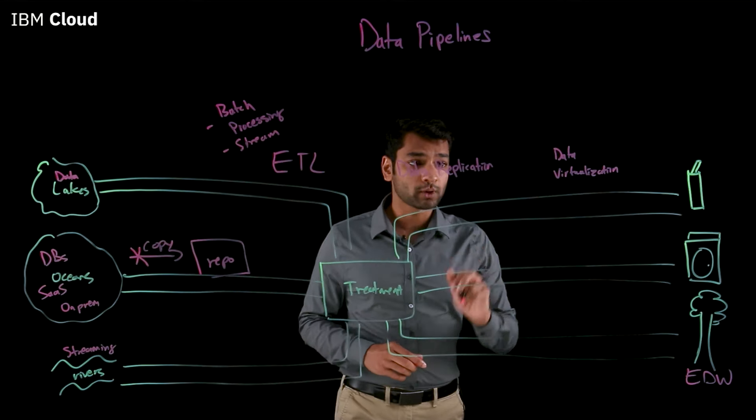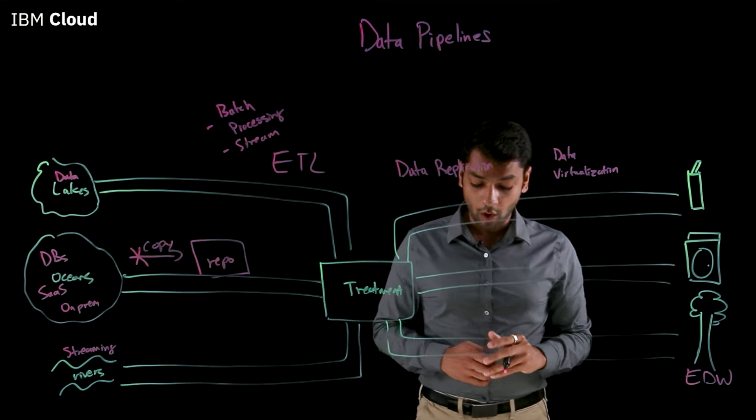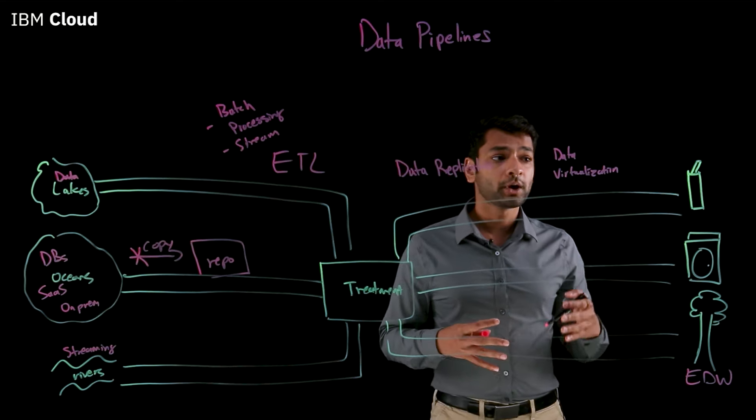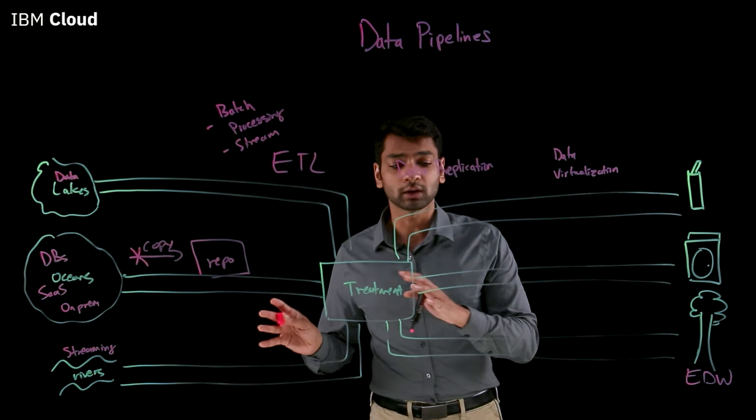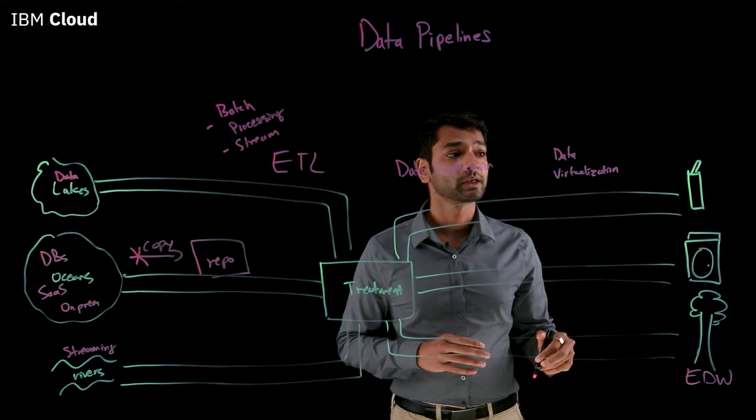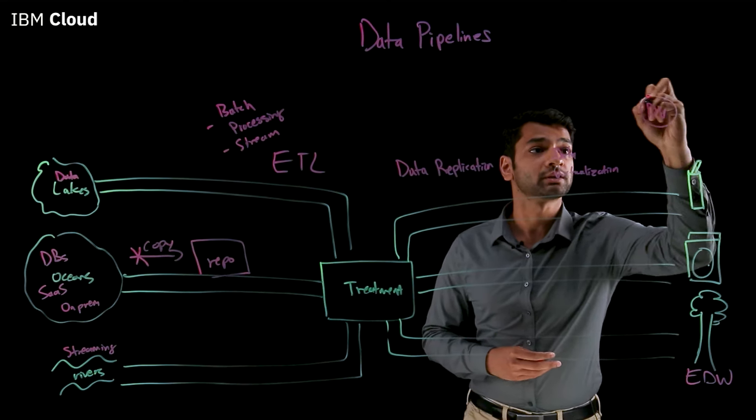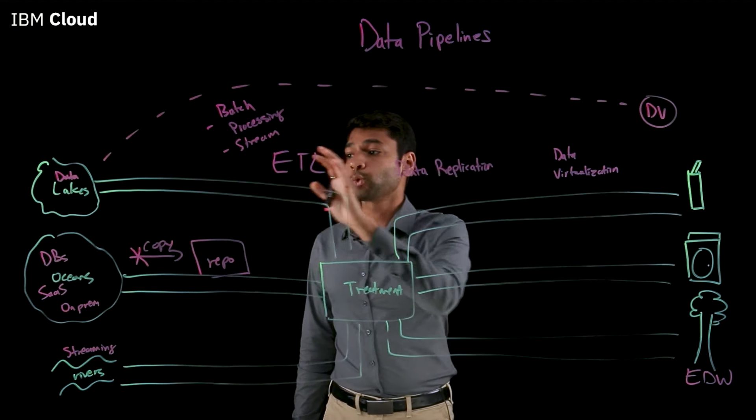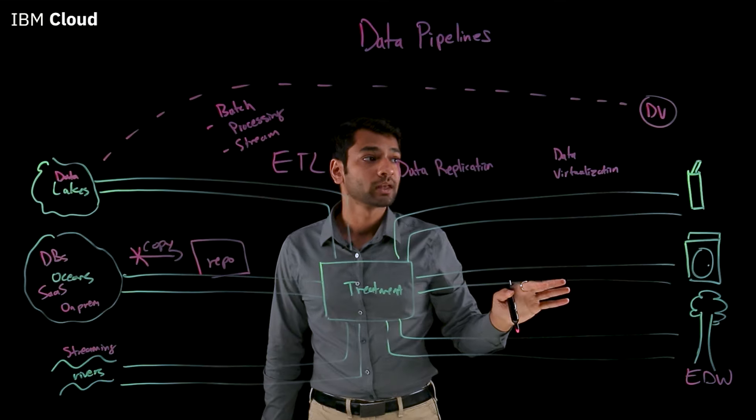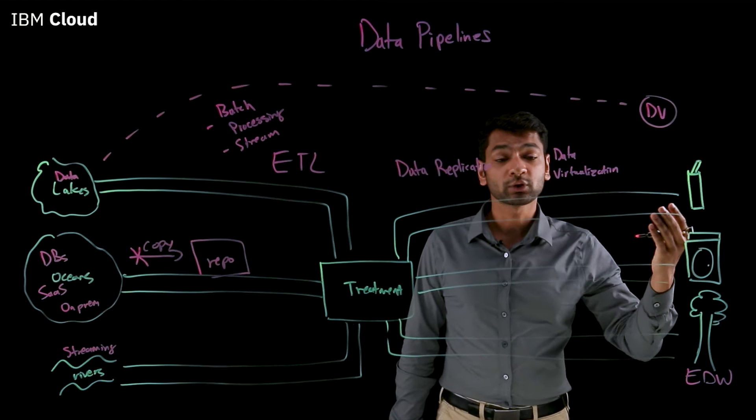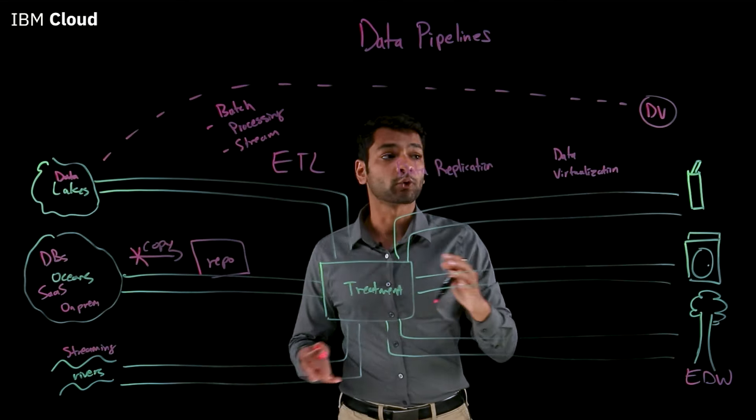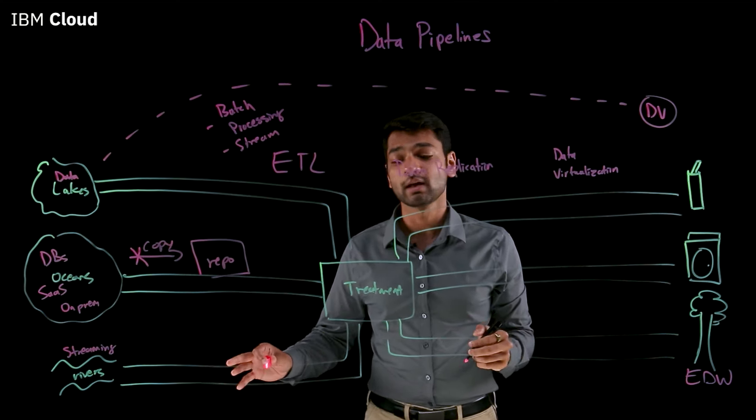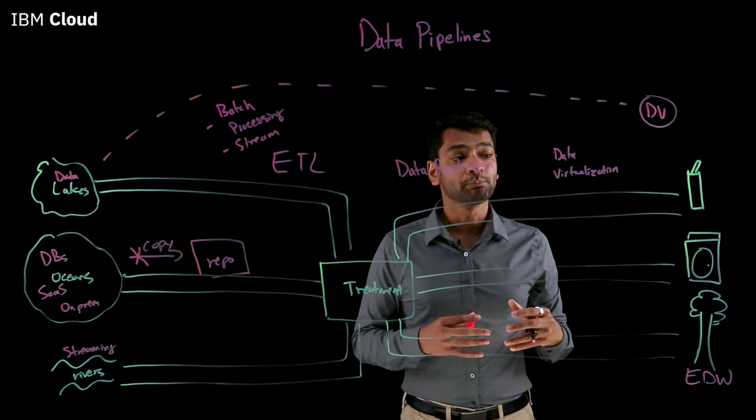Okay, so the last one I want to touch on is data virtualization. So all of the methods that I've described so far require you to copy data from where it is and move it into another repository. But what if we want to test out a new data use case and don't want to go through a large data transformation project? Well, in that case, we can use a technology called data virtualization to simply virtualize access to our data sources and only query them in real time when we need them without copying them over. And once we're happy with the outcome of our test use case, we can go back and build out these formal data pipelines. So data virtualization technology allows us to access all these disparate data sources without having to go through building out permanent data pipelines.